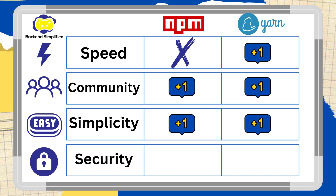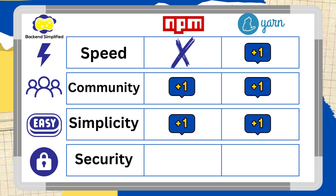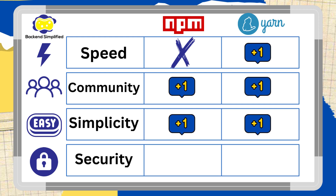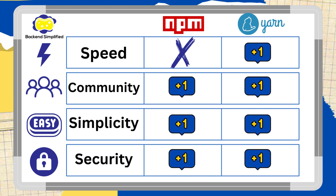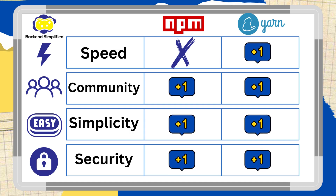The last category is security. While some argue that Yarn is more secure than NPM, I believe this isn't entirely accurate. Both NPM and Yarn have taken substantial steps to enhance their security measures. These include features such as vulnerability scanning, security advisories, and the capacity to audit packages for known vulnerabilities. Furthermore, the fact that they are both open source projects typically adds an extra layer of security. Therefore, let's give one point to each of them for their efforts in ensuring security.